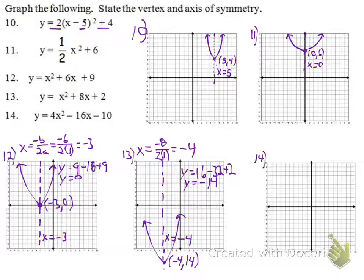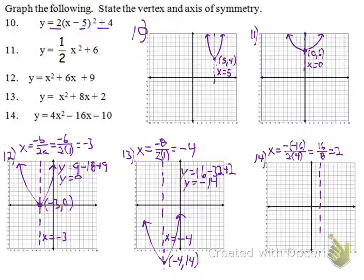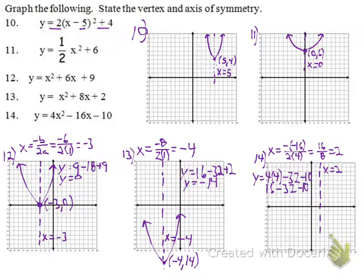Number 14, x equals negative b over 2a: negative 16 over 2 times 4. That's 16 over 8 equals 2, so our axis of symmetry is at x equals 2. Substituting into the equation: 4 times 2 squared minus 16 times 2 minus 10. That's 16 minus 32 minus 10, giving negative 26. So our vertex is at 2, negative 26, and since the coefficient is negative, it opens down.